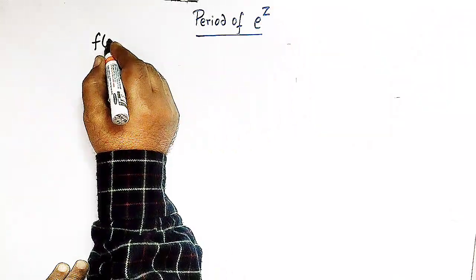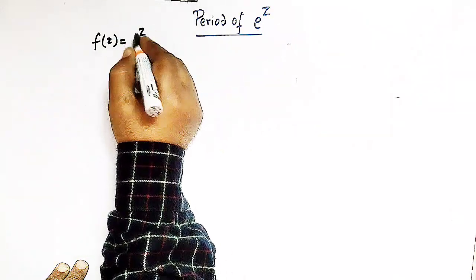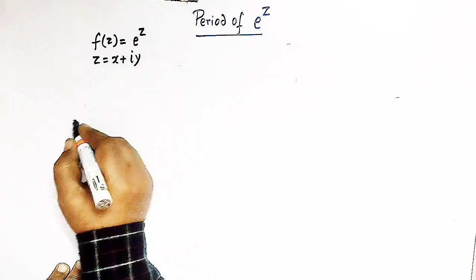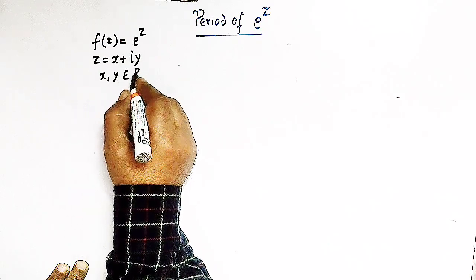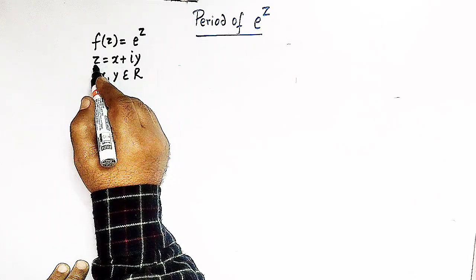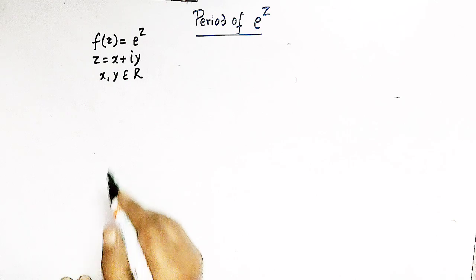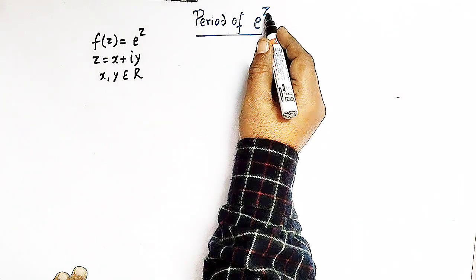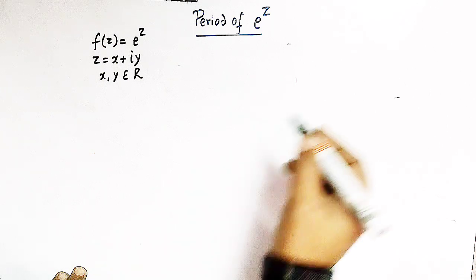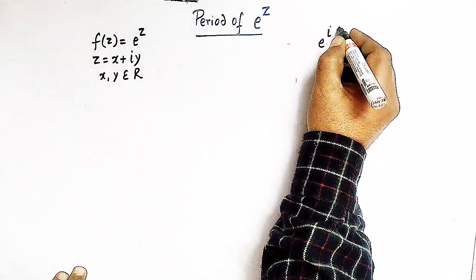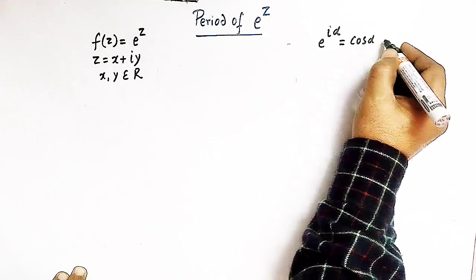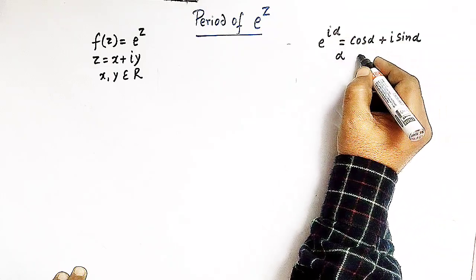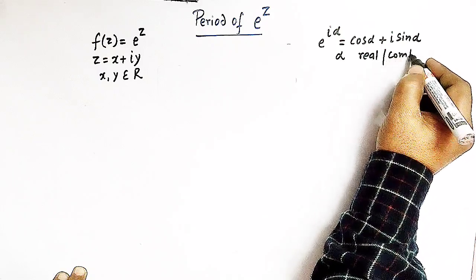Let us denote the function e raised to z by f of z, and here z is a complex number. Let us take z as x plus iota y, where x and y belong to the set of real numbers. So x is the real part of z and y is the imaginary part of z. We will find the periodicity of e raised to z using the famous Euler's theorem, which says that e raised to i alpha is equal to cos alpha plus iota times sin alpha, where alpha is a real or complex number.